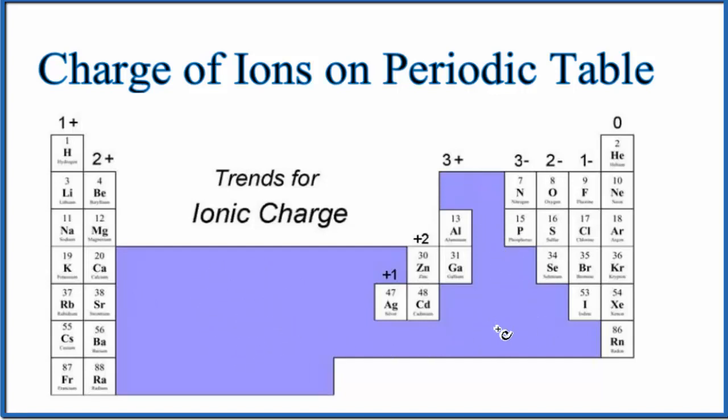We go 3+ for aluminum and gallium. We don't consider any of these to really have ionic charge: 3-, 2-, 1-, and 0. You'll note that zinc should be 2+ and cadmium will be 2+ always, and then silver will always be 1+.